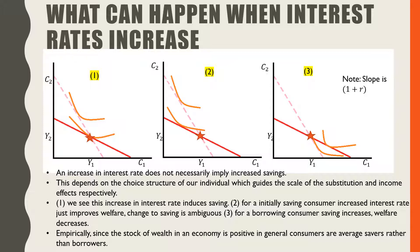Overall, the welfare change for the initially saving consumer is positive. For the initially borrowing consumer, an increase in interest rate is actually going to make him worse off — so even though he is going to save more by construction, he is made worse off. Since the stock of wealth in the economy is positive, in general consumers are average savers rather than borrowers — this is an empirical fact.